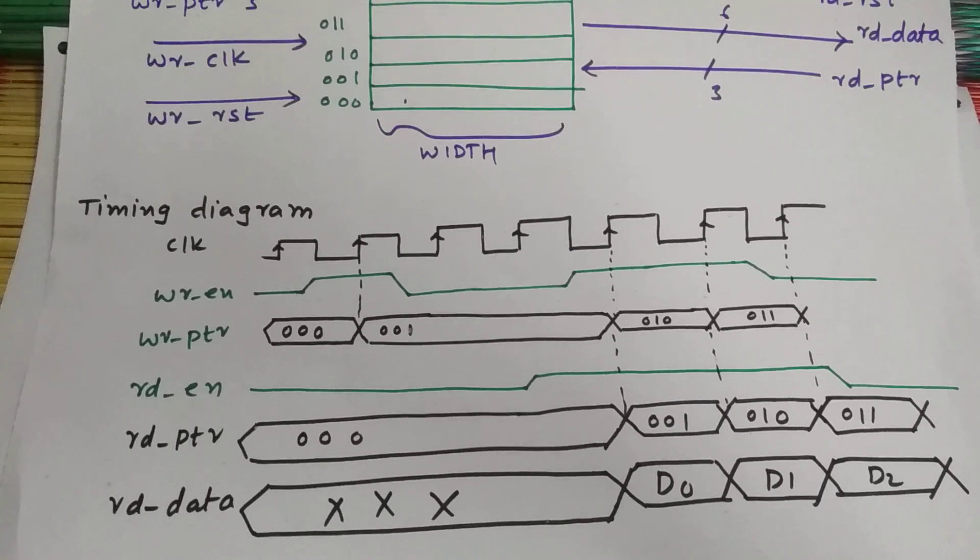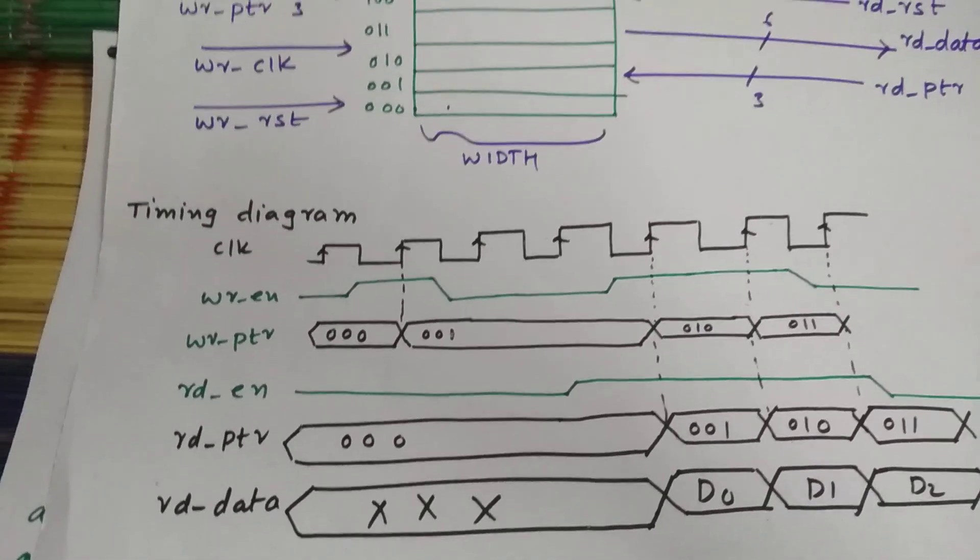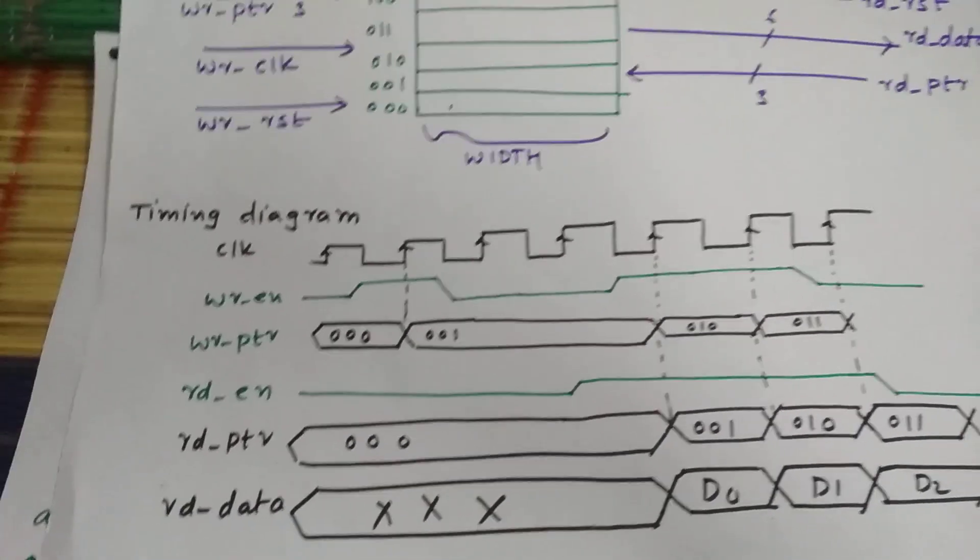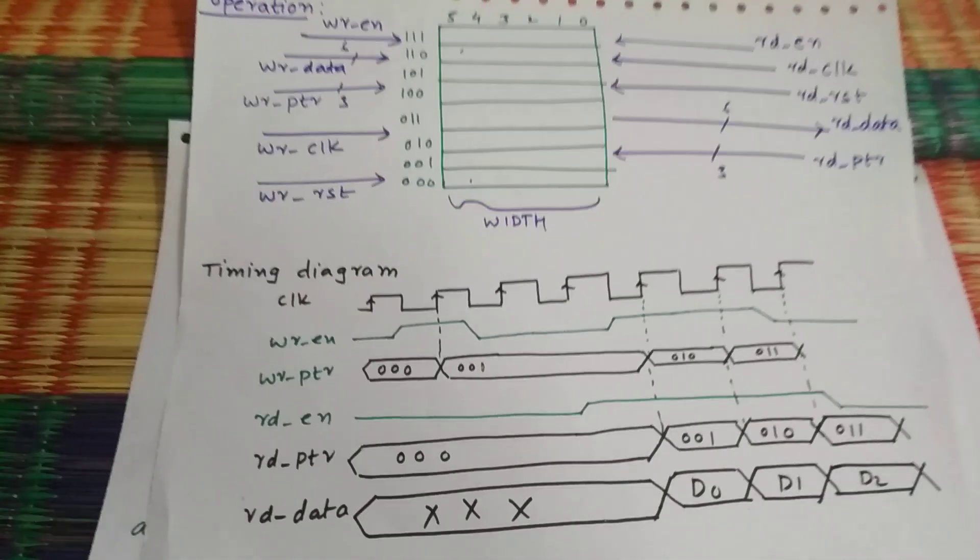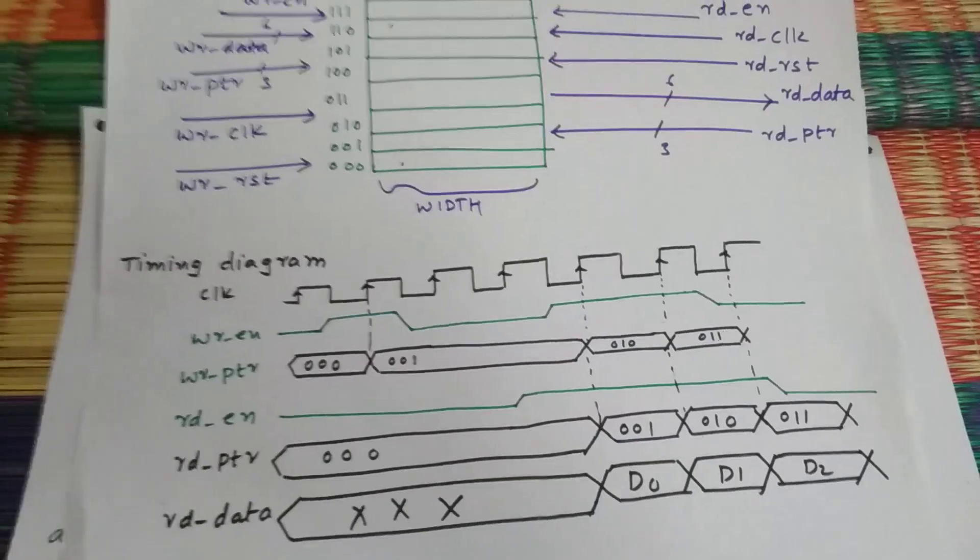If you have any doubts, please comment down below. I'm going to take the class of asynchronous FIFO, but asynchronous FIFO requires understanding gray and binary pointer and synchronization, which I'll deal with next. After that I'll go with the asynchronous FIFO. Thanks for watching, please subscribe for more videos.